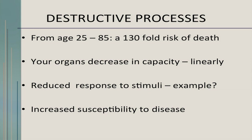Destructive processes: from age 25 to age 85, we have a 130-fold risk of death. Our organs decrease in capacity linearly — heart function, liver function, etc. — but at different rates depending on the organ system. We also have reduced response to stimuli. As we age in our late 40s and 50s, we may not hear as well — a reduced response to external stimuli. Similarly, we develop cataracts and thickening of the lenses in our eyes, and may need more stimuli to achieve the same results. And of course, as we age, we have increased susceptibility to disease states.